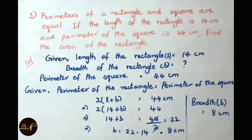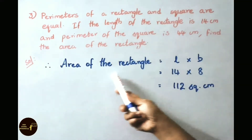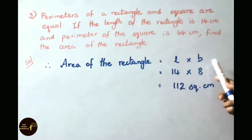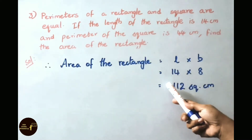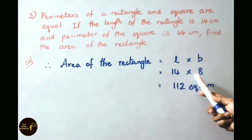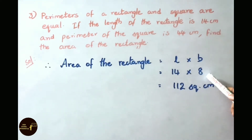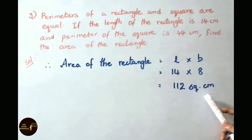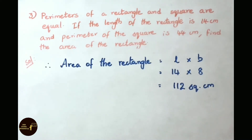Now let us find area of the rectangle. Area of the rectangle equals length into breadth. Length is 14 cm and breadth we found is 8 cm. 14 into 8 equals 112 square cm. Therefore area of the rectangle is 112 square cm.